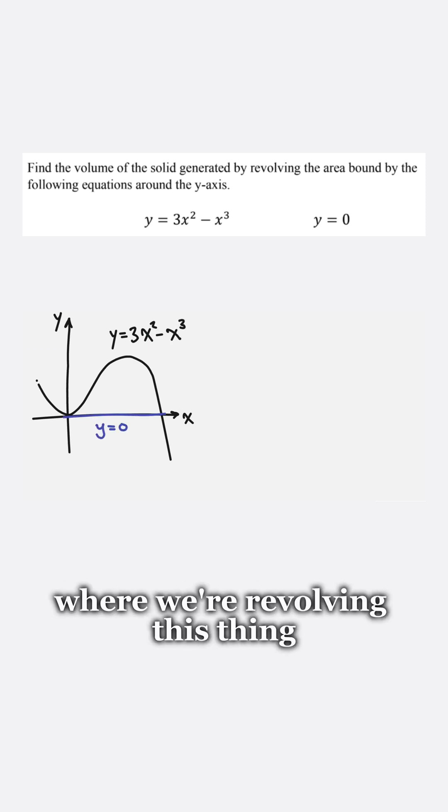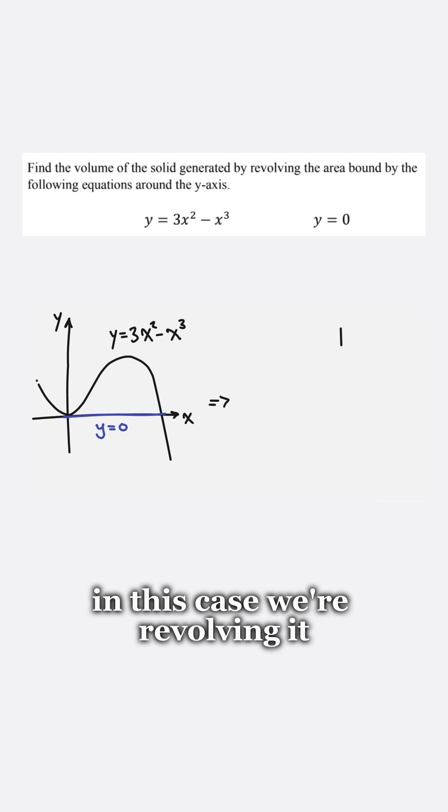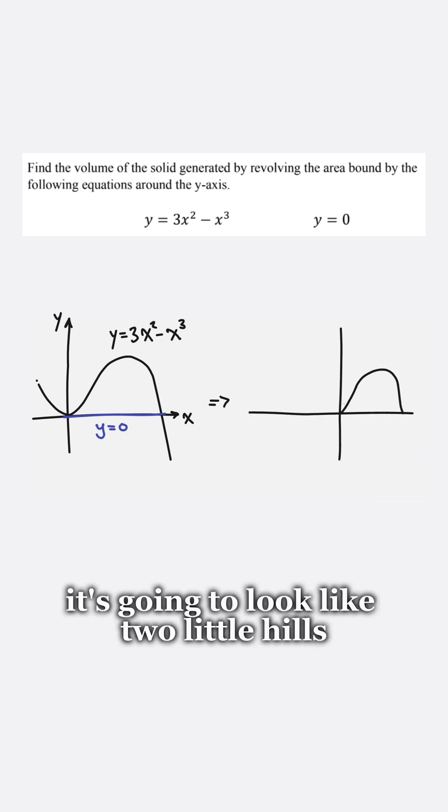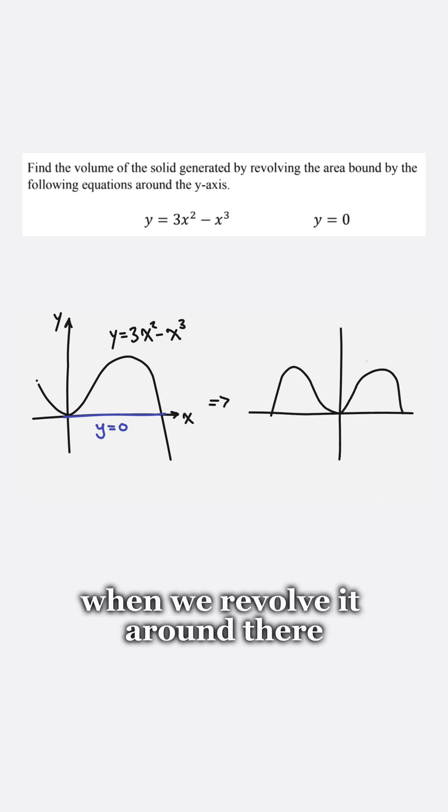Then the next thing we have to look at is where we're revolving this thing. In this case we're revolving it around the y-axis. So if we do that, it's going to look like two little hills when we revolve it around there.